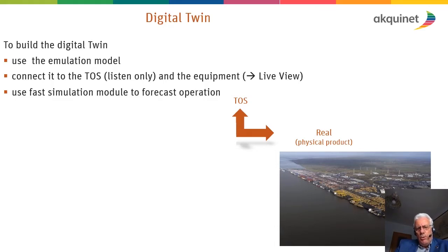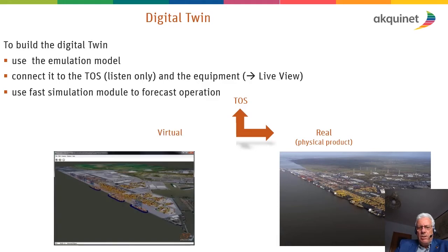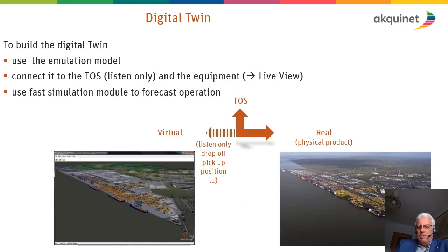In practice, you have a TOS (Terminal Operating System) controlling the real terminal. The next step is to connect the TOS to a model — like the simulation and emulation model I showed before — so that both sides maintain the same state at all times. The key capability is then being able to run fast simulations on this model to forecast the operation into the future.